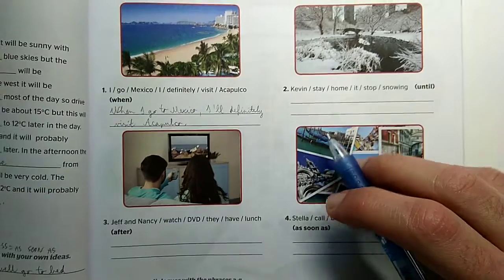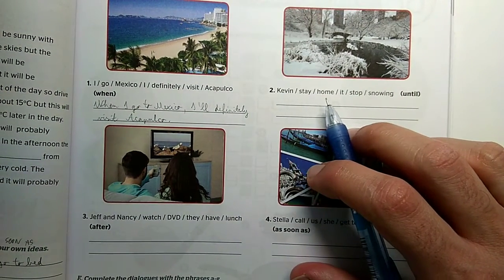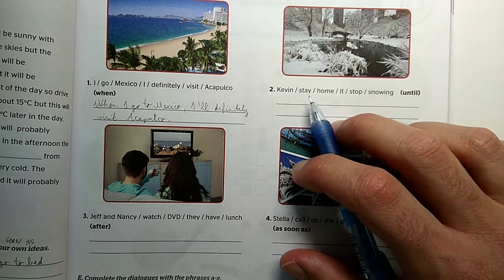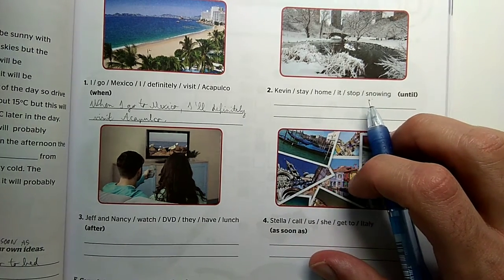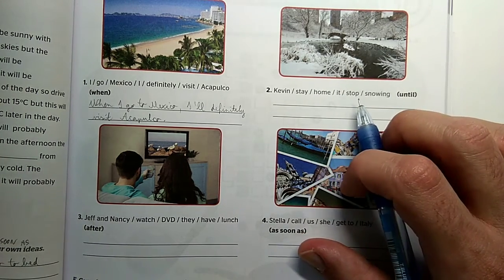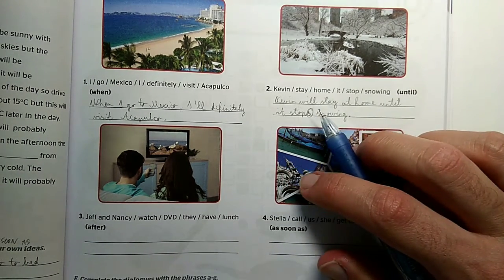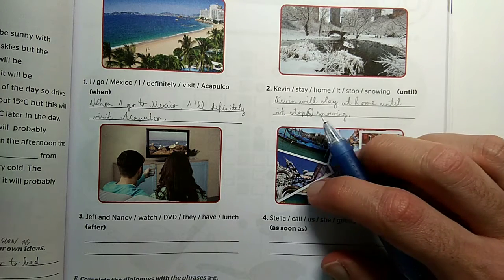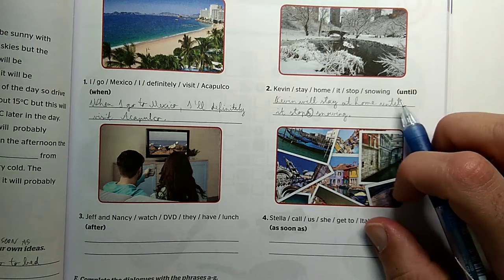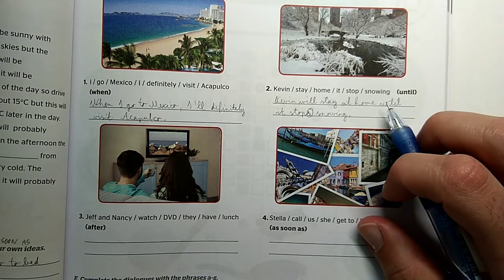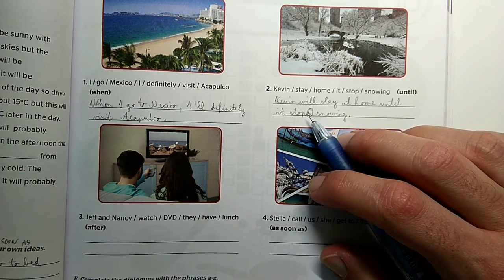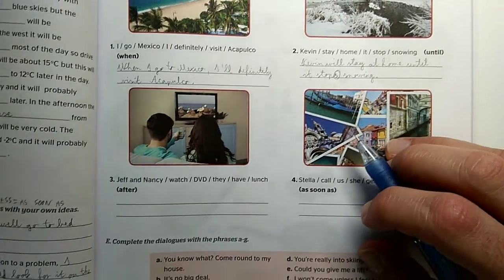The next one, number two. Kevin will stay at home, it stops snowing. Kevin will stay at home until it stops snowing. This will be the if clause here. Kevin will stay at home until it stops snowing. So there can't be a comma here because the if clearly shows the boundary between the two clauses. Pay attention that there should be an S at the end of the verb because of third person. Until it stops snowing.